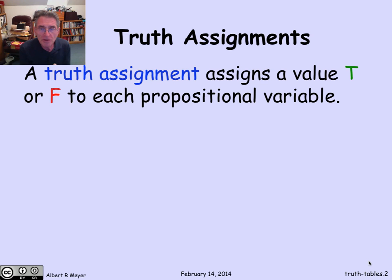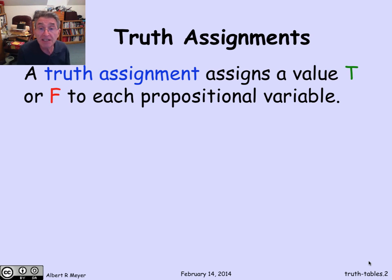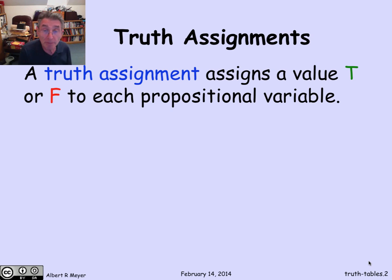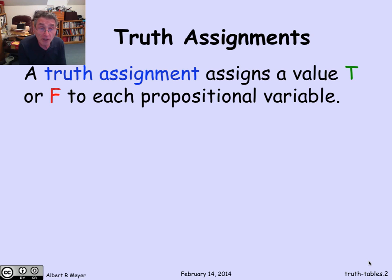If I'm thinking about a propositional formula that's a composite one built out of lots of more atomic primitive ones, then in order to figure out the value of the whole thing, I need to know the values of the individual components. So if we think of a formula involving p's and q's and r's that are true-false value propositional variables, then I need a truth assignment to know the values of those variables in order to know whether the formula is true or false.